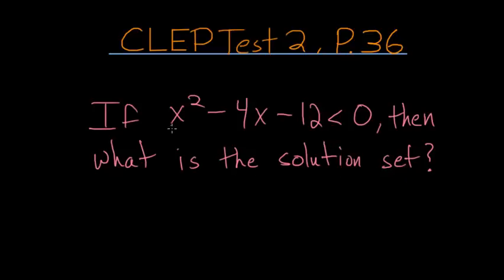First notice that this quadratic can be factored. We have two sets of binomials, and using the FOIL method in reverse, we know that the first terms of these binomials multiply to get x squared. Since the coefficient is 1, each of these would just be x.